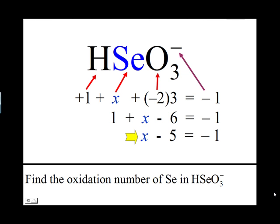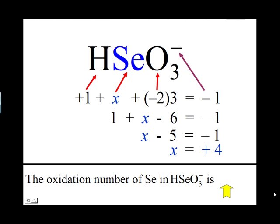Adding 5 to both sides of the equation, x equals negative 1 plus 5, which gives us positive 4. So the oxidation number of Se in HSeO3 minus is plus 4.